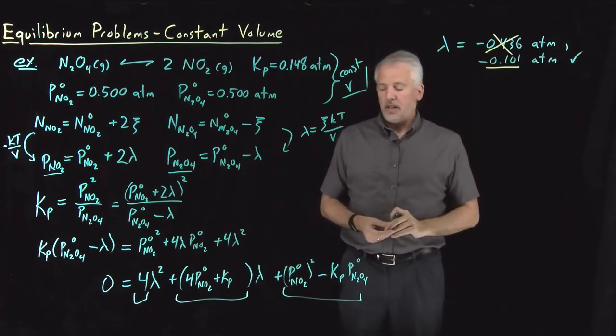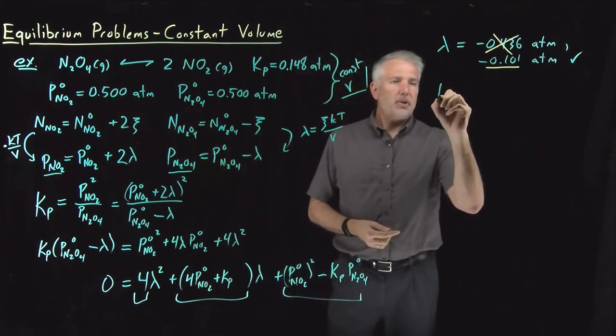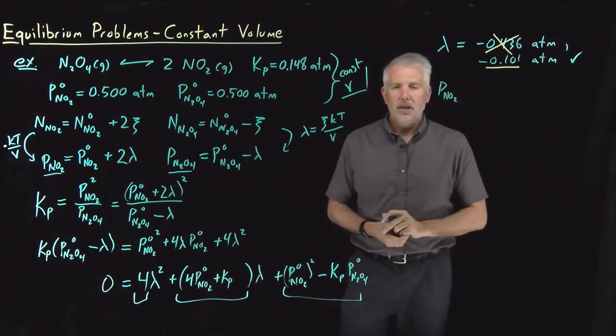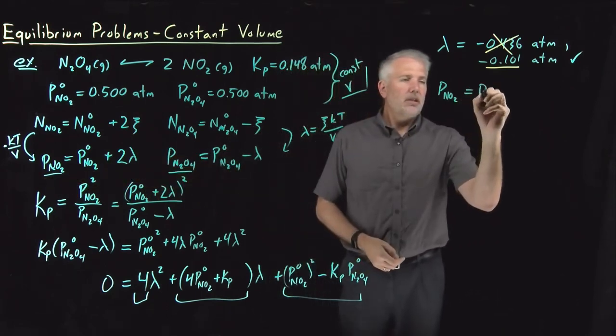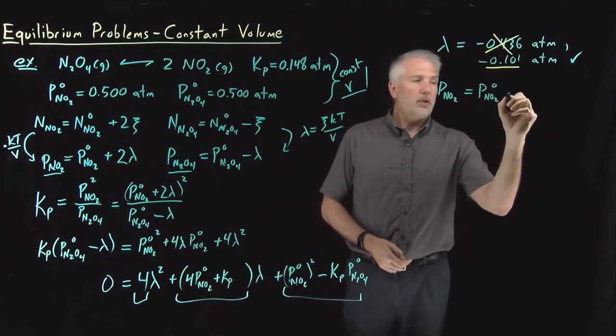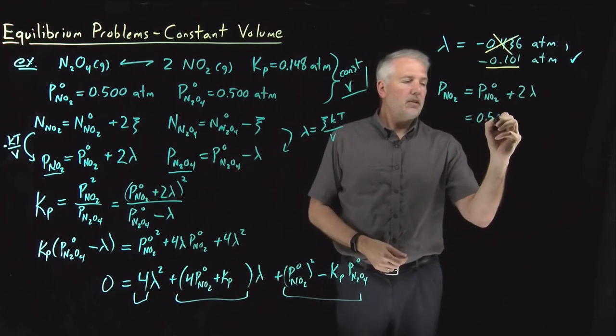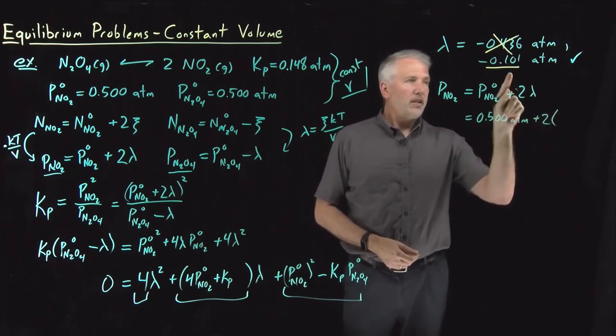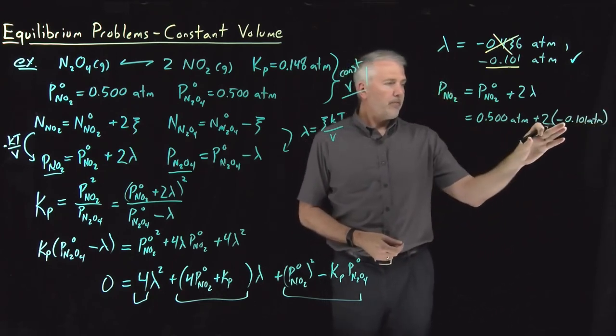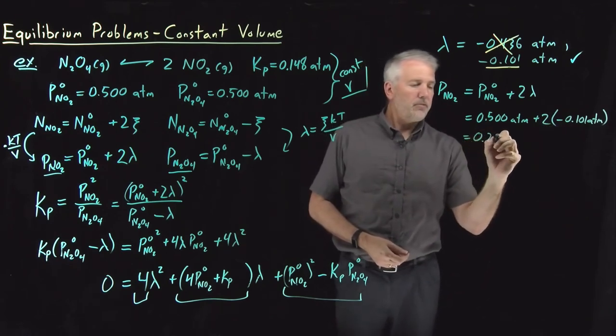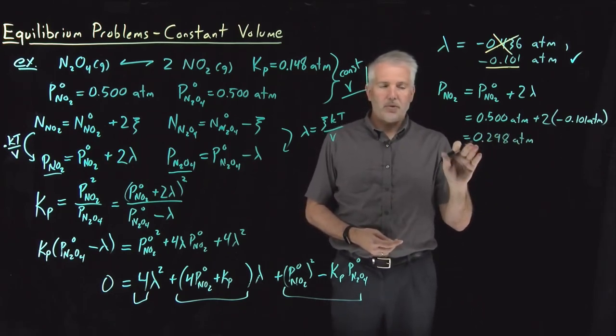So we solve for lambda. What we're interested in is not the value of lambda, not how much the reactant shifts forwards and backwards, but how much of each species there is. So the pressure of NO2 and the pressure of N2O4 once we've reached equilibrium. So we have expressions for those. Pressure of NO2 is its initial pressure plus 2 lambda. Initial pressure of NO2 is half an atmosphere. I'm going to add twice the value of lambda, which is negative a tenth of an atmosphere, roughly. So 0.5 minus 0.202, that leaves me with only 0.298 atmospheres of NO2. So that's the partial pressure of NO2 that we have once we've reached equilibrium.